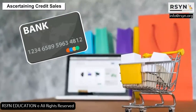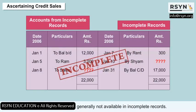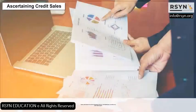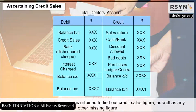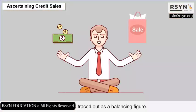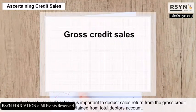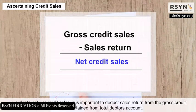Ascertaining Credit Sales: Credit sales figures are generally not available in incomplete records, and some other information regarding debtors may also be missing. Hence, a total debtor's account is maintained to find out the credit sales figure as well as any other missing figure. This figure is traced out as a balancing figure. In order to get net credit sales, it is important to deduct sales return from the gross credit sales ascertained from the total debtor's account.